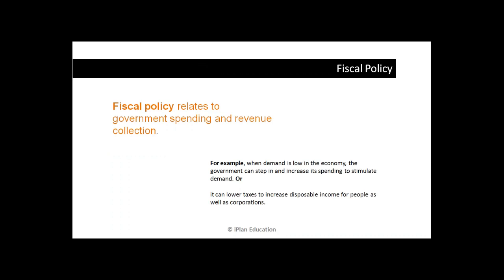What is fiscal policy? Fiscal policy relates to government spending and revenue collections — that means it is related to government budgets. When demand is low in the economy, the government steps in and increases expenditures. They have a higher government expenditure budget, more projects, more jobs, and they infuse more money into the system.